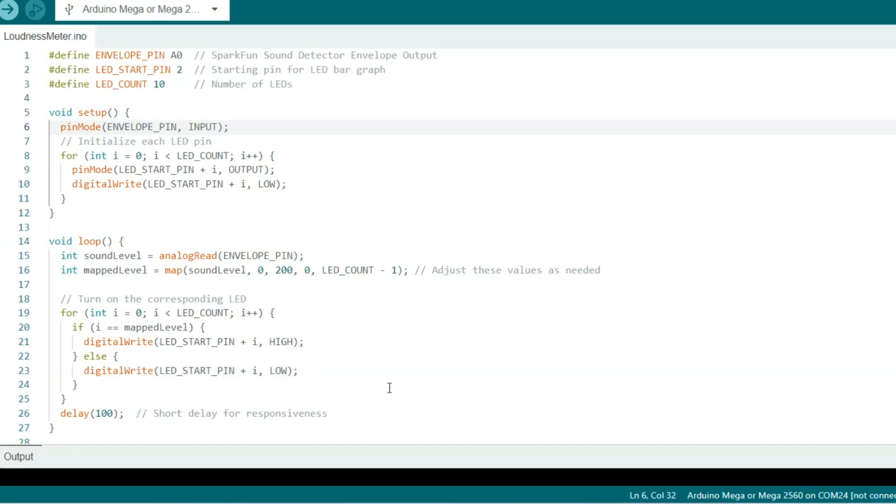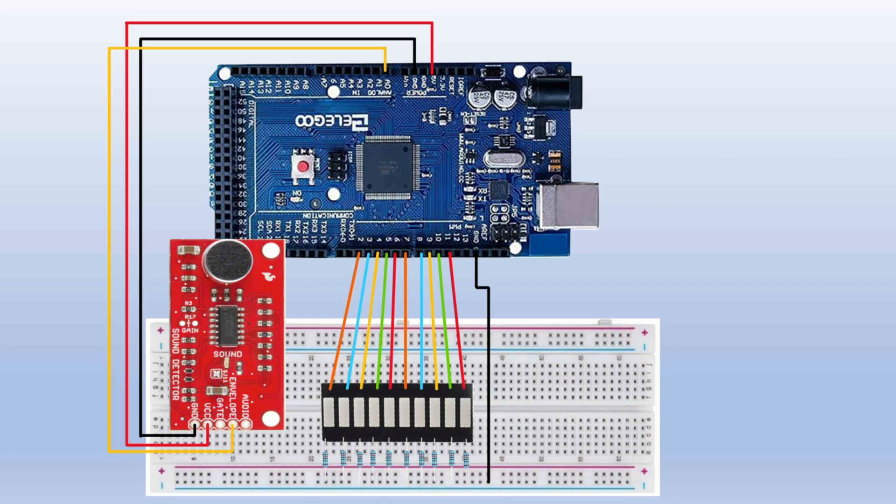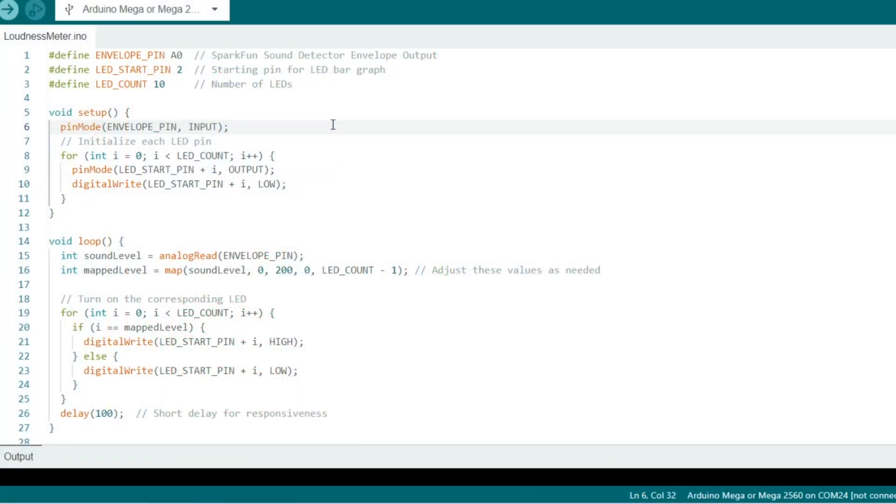This code creates a sound level visualizer using LEDs. It reads the sound level, maps it to one of the 10 LEDs and then lights it up to the corresponding LED while keeping the other ones off. You'll see in the setup we configure the envelope pin to read the sound level and then we initialize each LED as an output and set it to low or off.